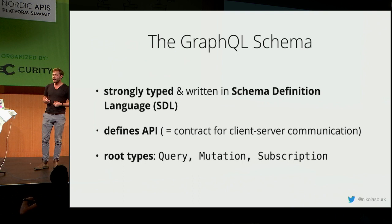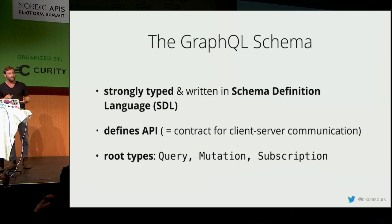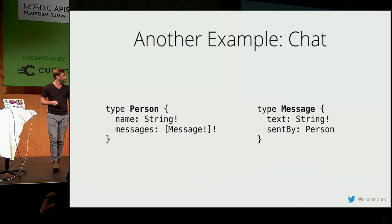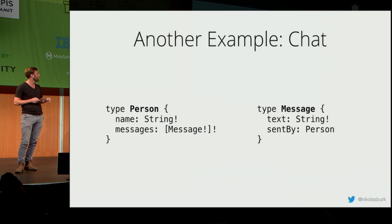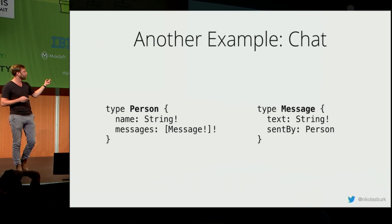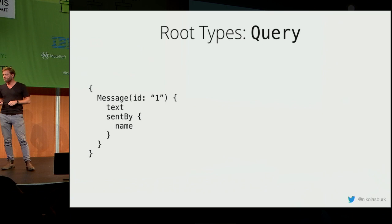The schema has three special types: query, mutation, and subscription, which define the entry points for your API. For example, here's the Schema Definition Language for a simple chat application — we define two types, Person and Message, each with a number of fields. Person has a name of type String and messages, representing a one-to-many relationship.